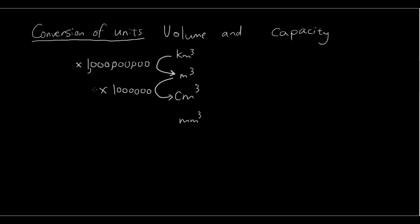So 1 kilometer cubed is 1 billion meters cubed — a very large conversion. And for centimeters cubed to millimeters cubed: originally times 10 for length, tripled to times a thousand. Going back up the ladder from a smaller unit to a larger unit, you just divide by the same amount.